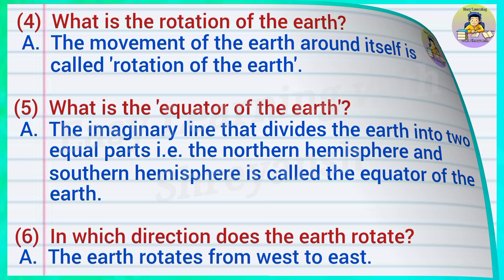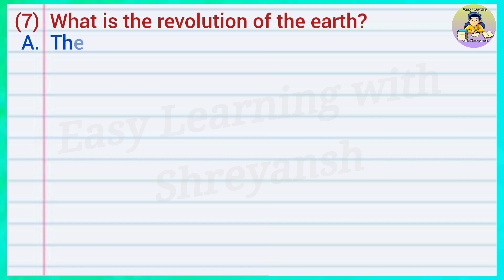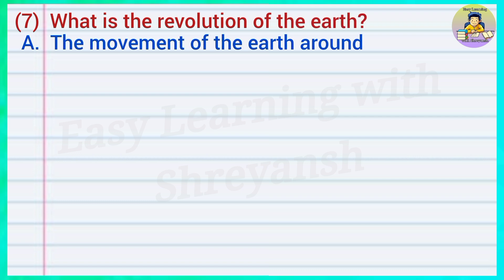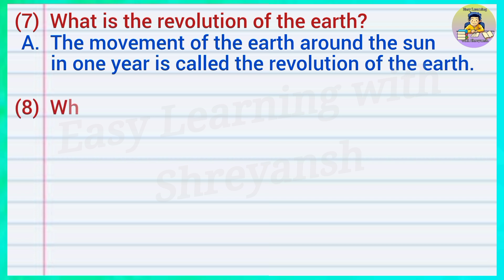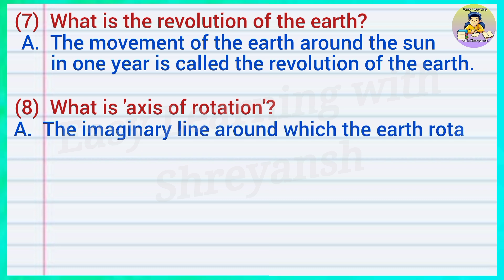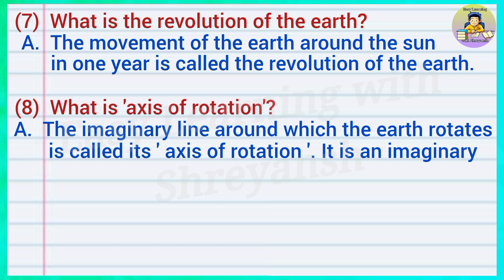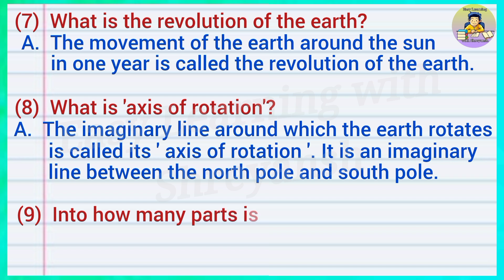Six: In which direction does the earth rotate? Answer: The earth rotates from west to east. Seven: What is the revolution of the earth? Answer: The movement of the earth around the sun in one year is called the revolution of the earth. Eight: What is axis of rotation? Answer: The imaginary line around which the earth rotates is called its axis of rotation. It is an imaginary line between the north pole and south pole.